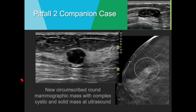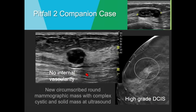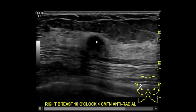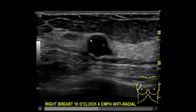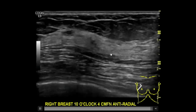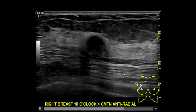Companion case: another new circumscribed round mammographic mass. At ultrasound, a fairly well-circumscribed — but not completely — nearly anechoic mass with irregular-looking septations and mural nodularity. No internal vascularity appreciated. This turned out to be high-grade ductal carcinoma in situ. On the clip you can really see those nodular, irregular mural components and thick septations, and appreciate that the margin is not completely circumscribed — with outpouching areas and angular and indistinct margins.